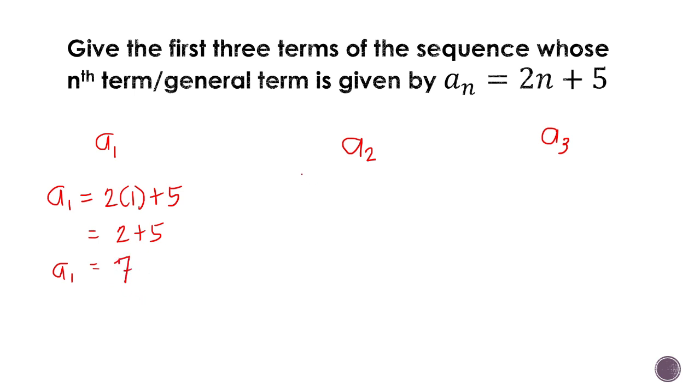So the first term of the sequence is 7. For the second term, we just have to substitute 2. The second term is 9. And for the third term, it is 11. So the first 3 terms of the sequence are 7, 9, and 11. That's how simple it is to solve for unknown terms given the general term. Thank you.